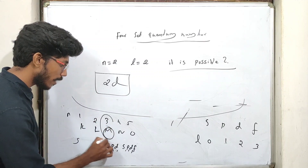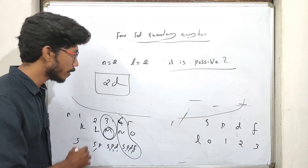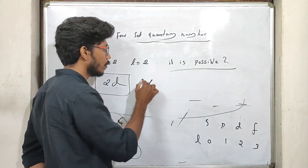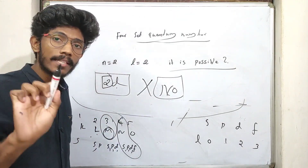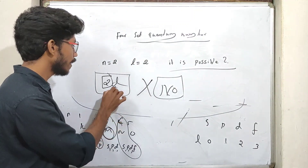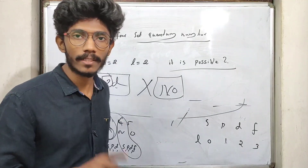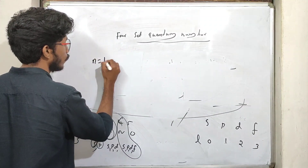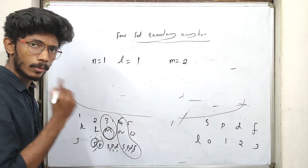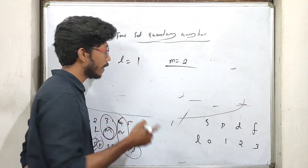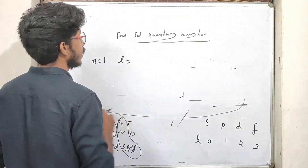When n equals 2, where does the D sub-shell start? D starts from the M shell (n=3), not from n=2. The n equal to 2 main shell contains only two sub-shells: s and p. Hence d is not in the L main shell — hence 2d is not possible. Now, is n equal to 1, l equal to 1, m equal to 2 possible?